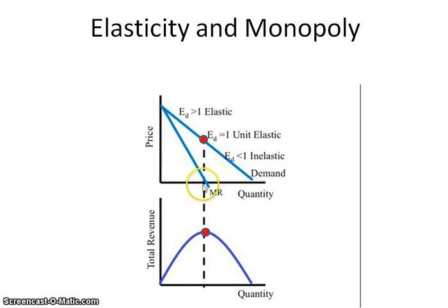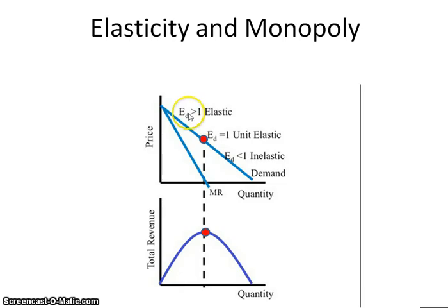You find unit elasticity where marginal revenue equals zero. All units prior to unit elasticity have elastic demand, so as price decreases, total revenue increases. All units after unit elasticity have inelastic demand, so as price decreases, total revenue also decreases.